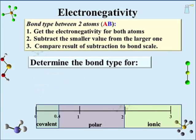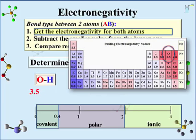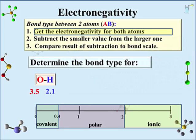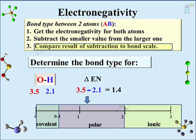Our last example is the oxygen-hydrogen bond. Going to the electronegativity scale, oxygen has a value of 3.5 and hydrogen a value of 2.1. Subtracting the smaller from the larger yields a difference of 1.4, which we take to the bond scale and find the bond to be polar covalent. Oxygen, with a larger electronegativity, has the shared electrons for a longer amount of time. The electronegativity scale gives us a straightforward process for identifying bond type.